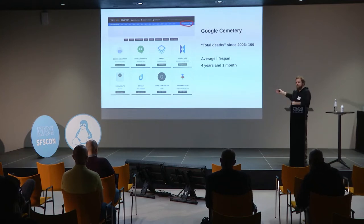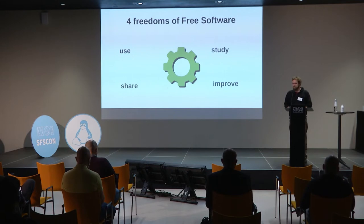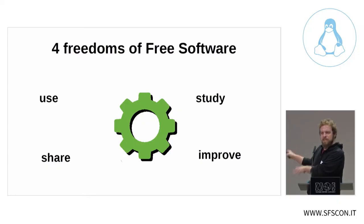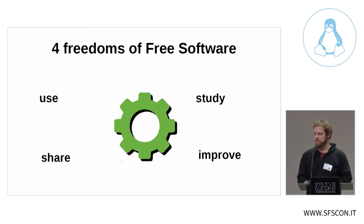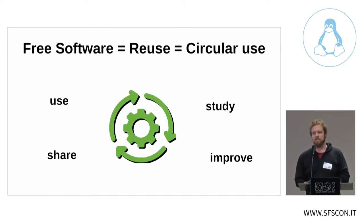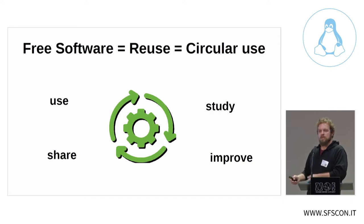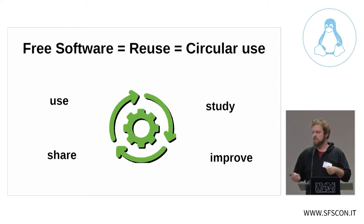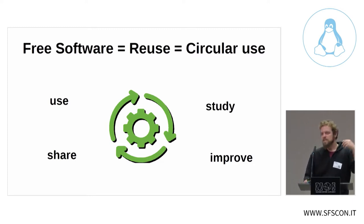That is not a lot, considering how much energy has been invested to produce that software. It would be far more sustainable if we could reuse that software — just take one of these projects and develop it further. This is what free software allows us to do. When I say free software, I mean software licensed under the four freedoms: to use, study, share, and improve the software. These four freedoms allow us to reuse software and have a circular use — where we develop software and even if it stops, we can reuse and develop it further.